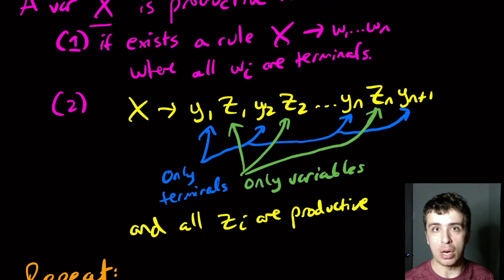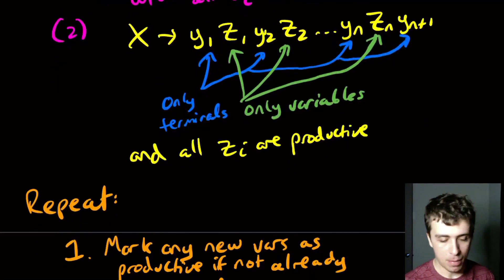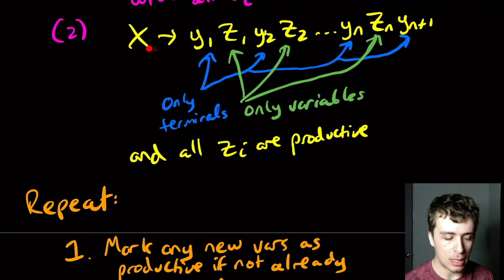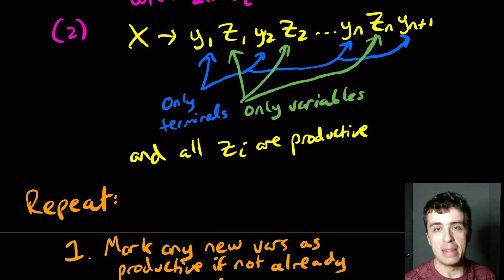And so the first step is to mark any new variables as productive if not already marked. And the way to achieve this is to scan through all the rules of the grammar. And then if we find one that is like this, this first one, then we immediately mark x as productive.